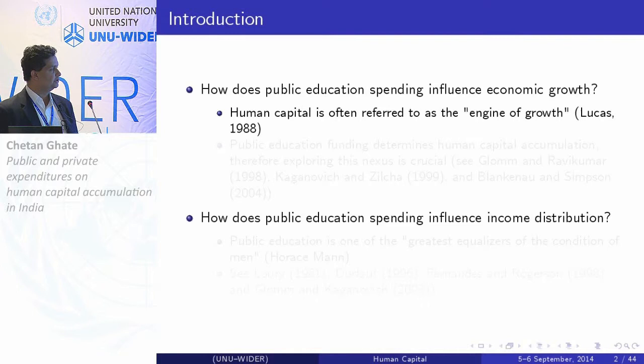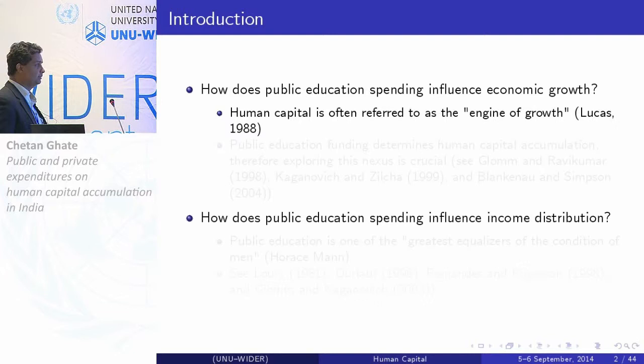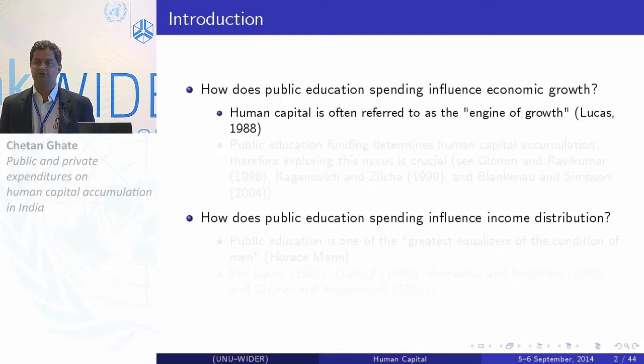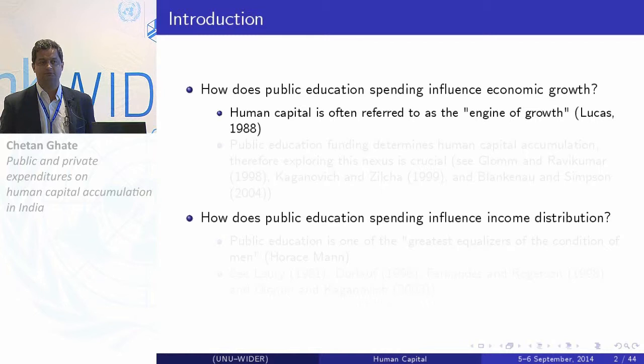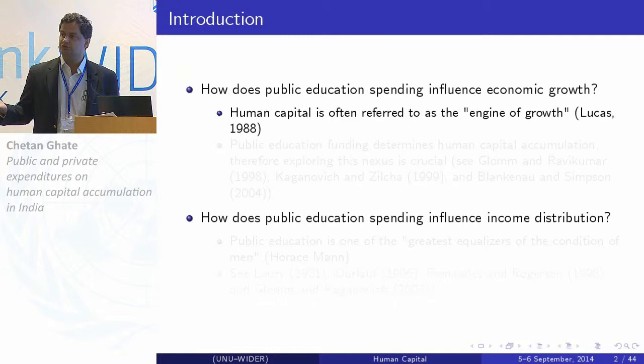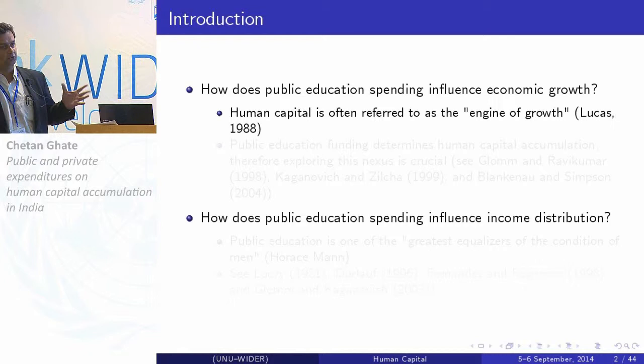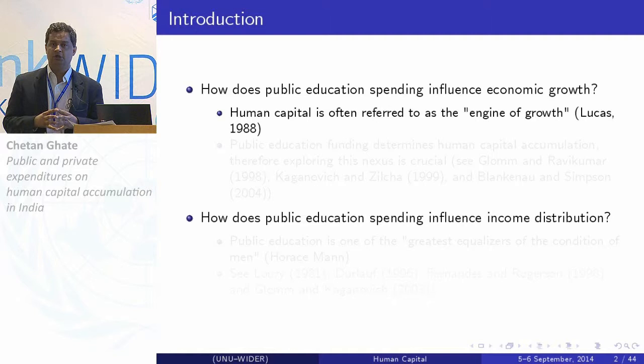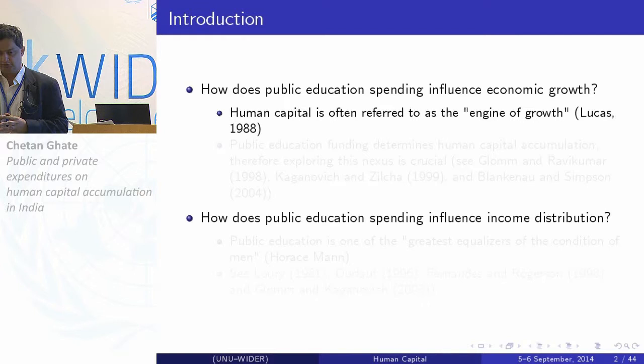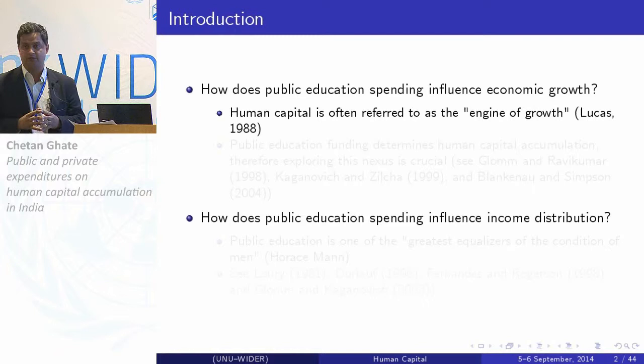There's also an equally large literature on the effect of public education spending on wealth distribution dynamics or income distribution. Horace Mann, the father of US public education, is famously quoted as saying public education is one of the greatest equalizers of the condition of men. There's been an attempt to formalize this in the context of models where income dynamics are stochastic, with interesting results about what happens in the steady state of the income distribution — whether it's ergodic, whether it's non-degenerate.